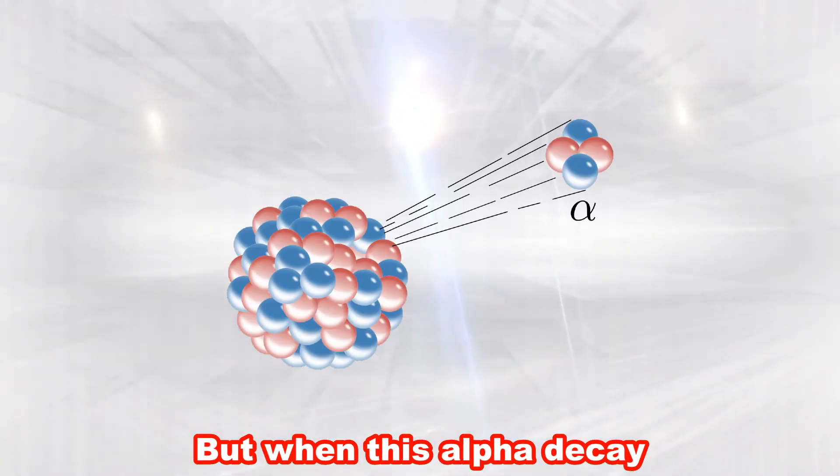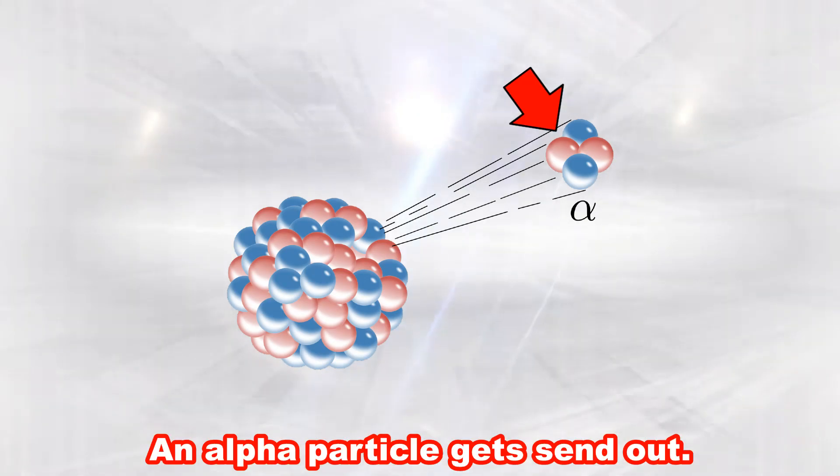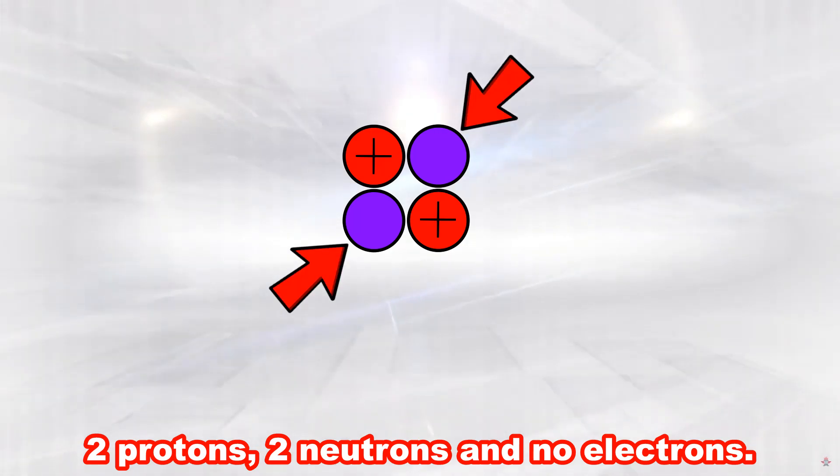But when this alpha decay happens an alpha particle gets sent out. An alpha particle consists of two protons, two neutrons and no electrons.